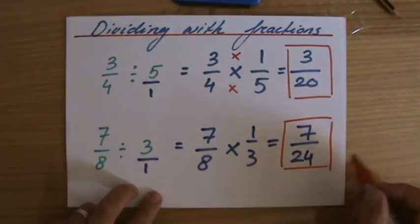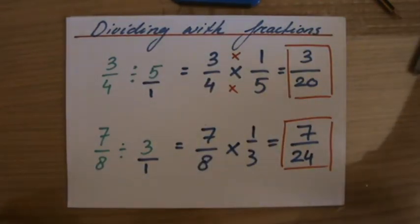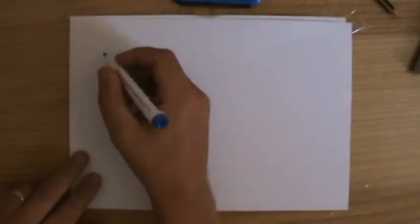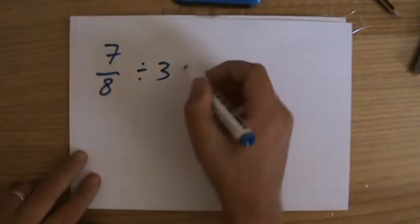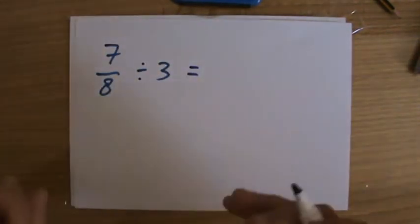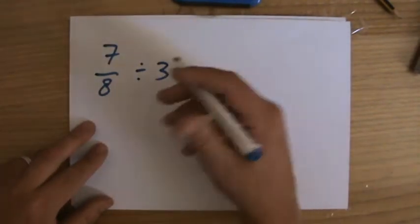Now, I also showed you in a previous video, and I just want to show you once more, 7 over 8 divided by 3. I want to give you one more method, especially when you're dividing by a whole number. 7 over 8 divided by 3. That is the same, and I'm going to find an equivalent fraction now, which I can divide by 3.